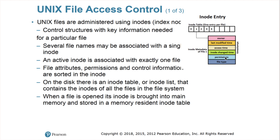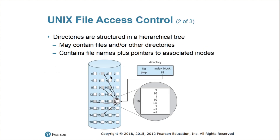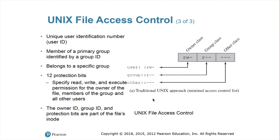On the disk there is an inode table or inode list that contains the inodes of all the files in the file system. Directories are structured in a hierarchical tree and contain files and other structures. There are three classes: the owner class, group, and other class. Unique user IDs and unique group IDs use three bits each — user three bits (read, write, execute), group three bits, and other three bits. That's why it's called the minimal type of access control. There are a total of 12 protection bits: nine for read/write/execute permissions for the owner, group member, and all other users, plus three sticky bits.